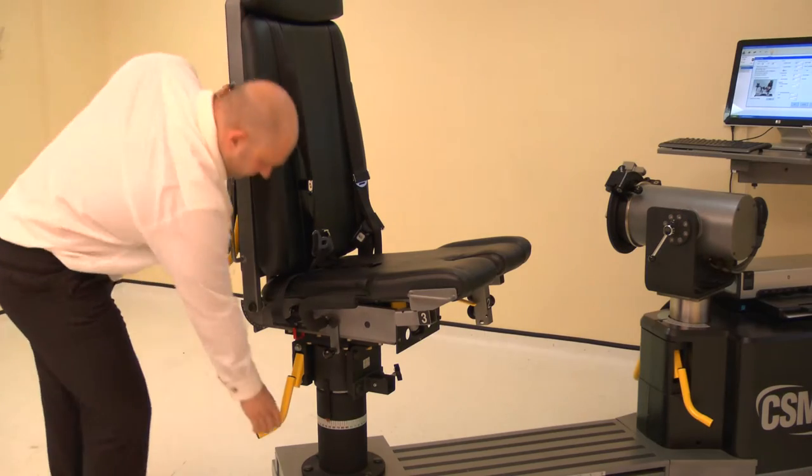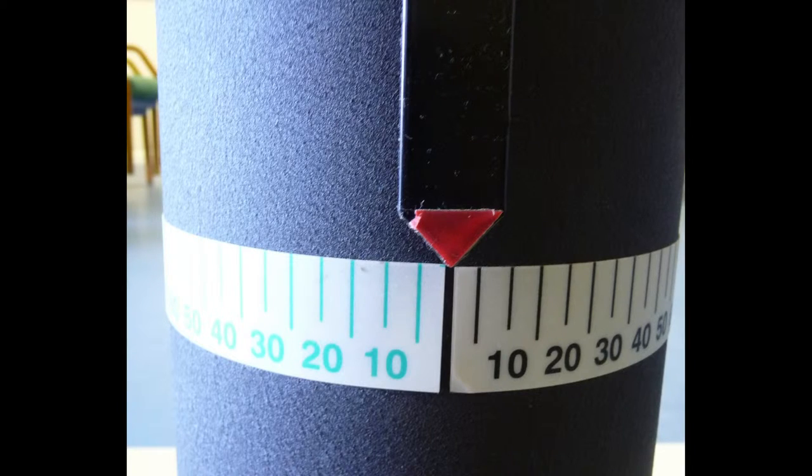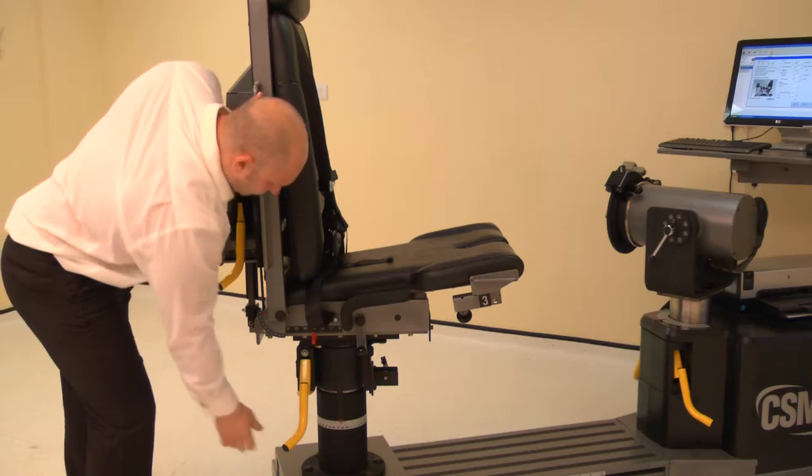Now adjust the chair rotation. Lift the locking handle and rotate the chair. Rotate the chair to 0 degrees on the black scale. Ensure both locking handles are pushed down to secure.